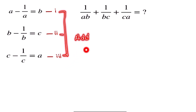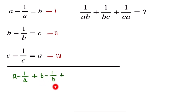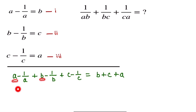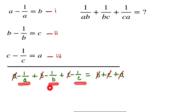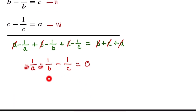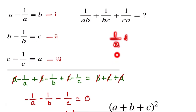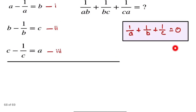First, we add all three equations. So we get A minus 1 by A plus B minus 1 by B plus C minus 1 by C, which equals B plus C plus A. The A, B, and C terms are equal on both sides and cancel out, leaving minus 1 by A minus 1 by B minus 1 by C equal to 0. Taking the common minus, we get 1 by A plus 1 by B plus 1 by C is equal to 0. Let this be equation 4.